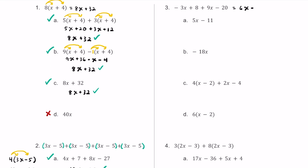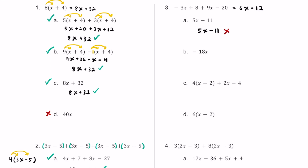For answer choice A, we have 5x minus 11. Looking at what we got — this says 6x and that says 5x, so those are not the same. Also, this says minus 12 and that says minus 11, so that's also not the same. Answer choice A will not work here.